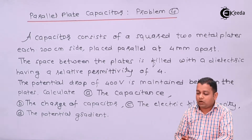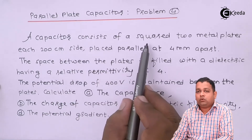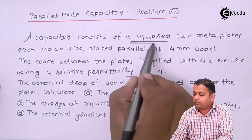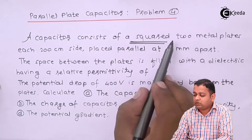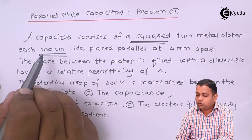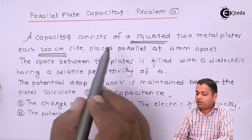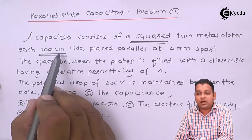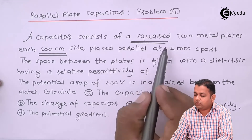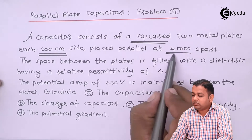After reading the problem statement, what information do we get? It is a parallel plate capacitor and the shape of the plates is square. The square-shaped metal plates have one dimension of 200 cm. As the shape is square, we can find the area of the conducting plate by taking side squared. They are placed parallel to each other — that is the condition for a parallel plate capacitor — and the separation distance is 4 mm.